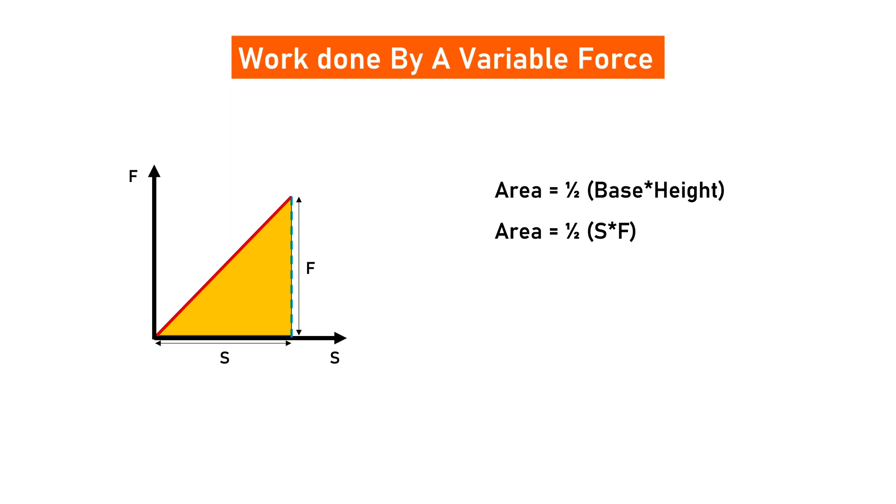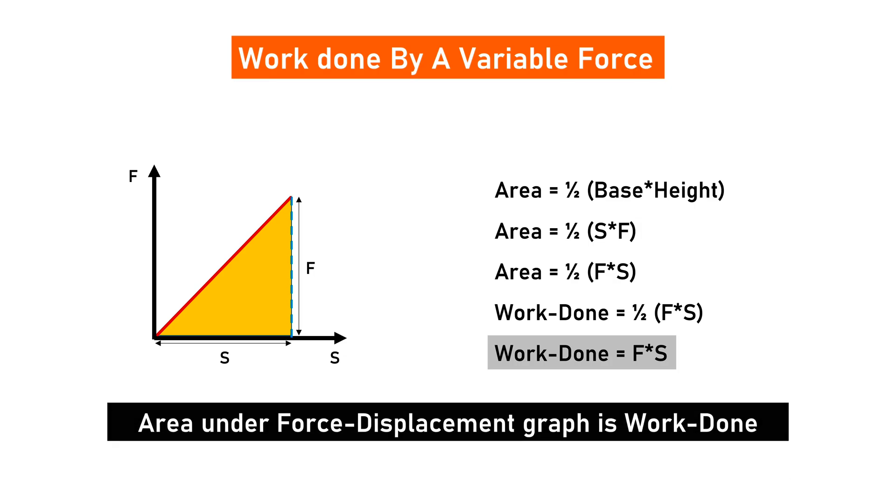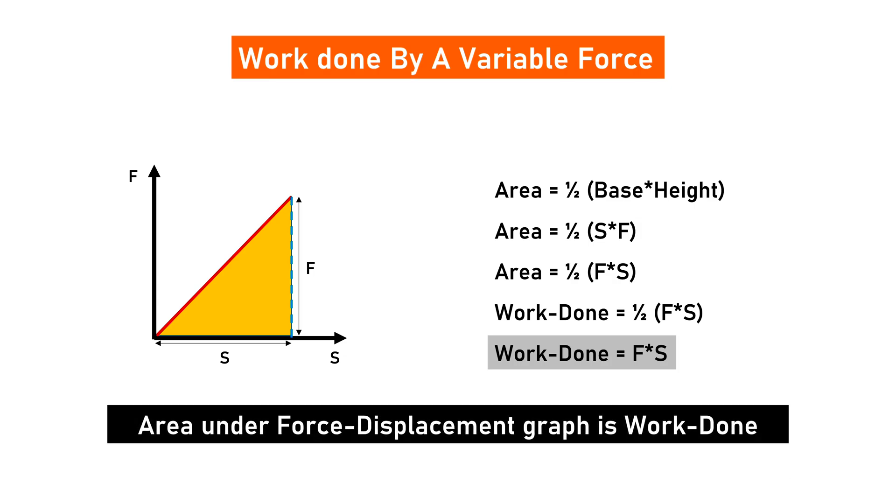Rearranging this equation, we will get half into F into S. Here you can observe that on the right hand side, we are getting the product of force and displacement. It means that we are indirectly getting the work done. From this, we can say that area under force and displacement will give the work done by the variable force.